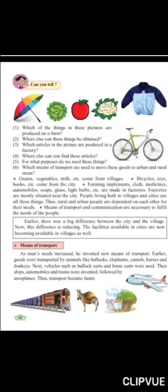From the city, farming implements, clothing, medicine, automobiles, soap, glass, and light tube lights are made in factories. All factories are mostly situated near the city. People living both in villages and in cities use all these things.